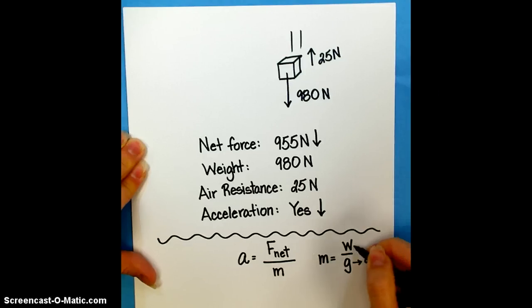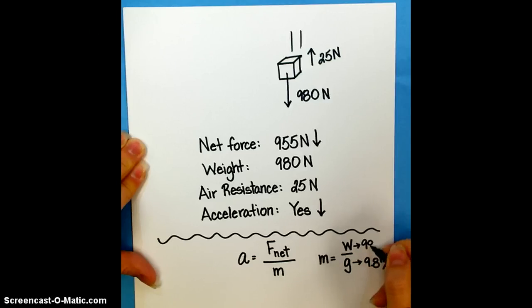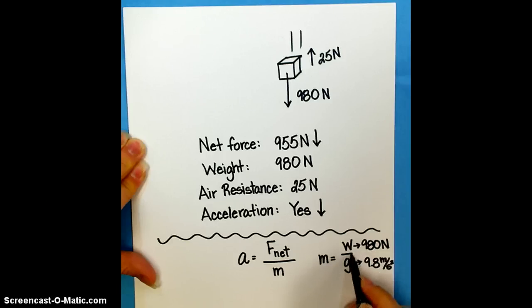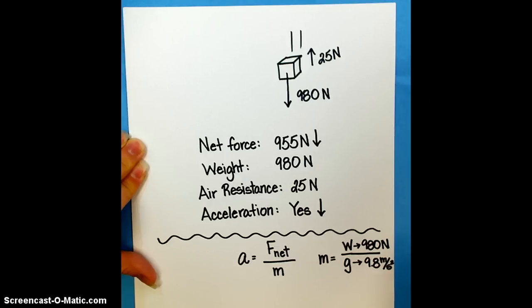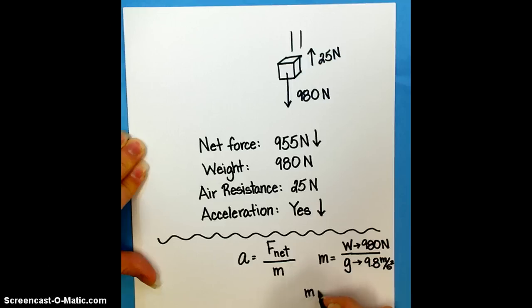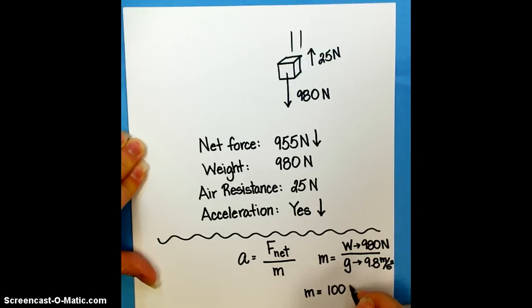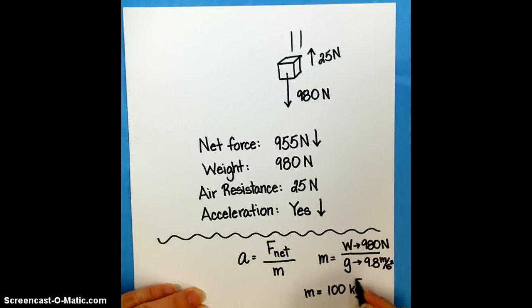So if we have weight, which is 980 newtons, and we have acceleration due to gravity is 9.8 meters per second squared, then we can calculate the mass. So the mass is going to be 980 divided by 9.8. And it just so happens that that comes out to a nice even 100 kilograms. So our mass is 100 kilograms.